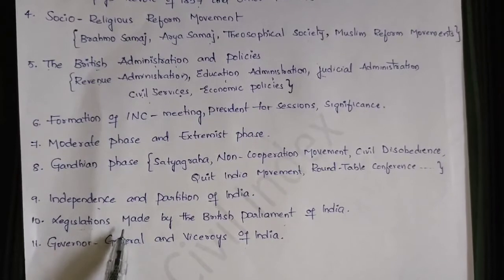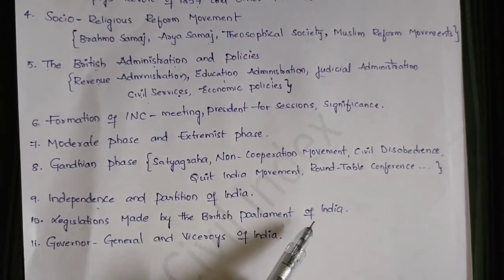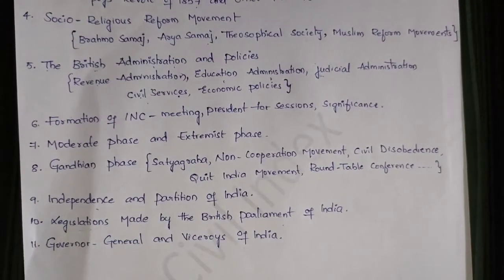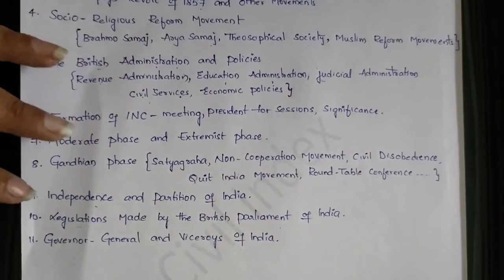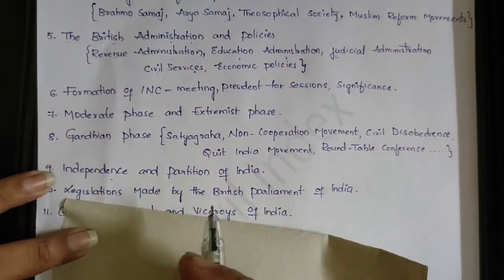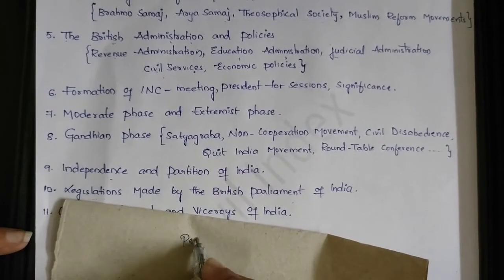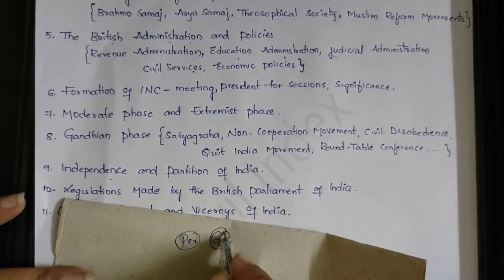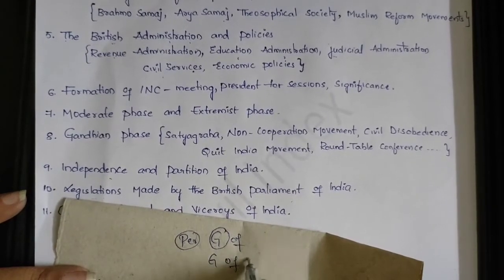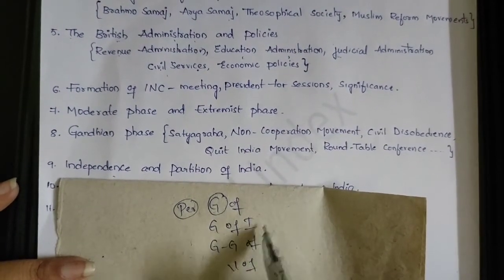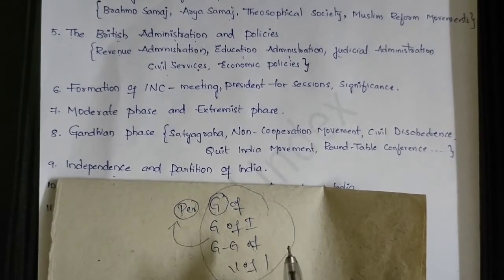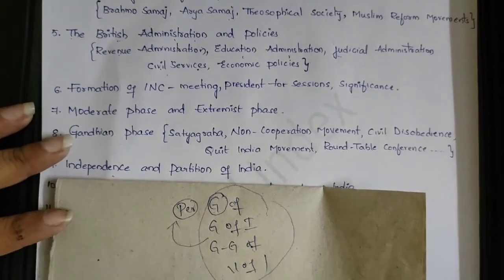Next is the legislations made by the British Parliament of India — essentially the laws from a history point of view. Then we have the Governor Generals and Viceroys of India, which are very important. These are the different titles given to the person in charge of India on behalf of the Crown — first as Governor of Bengal, then Governor General of India.